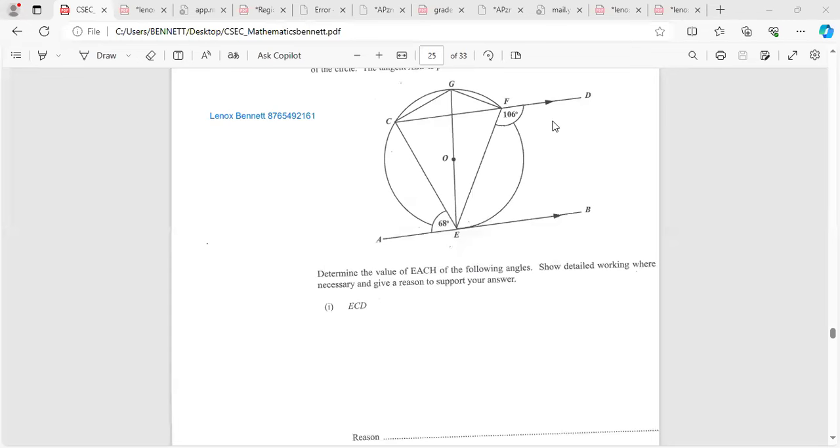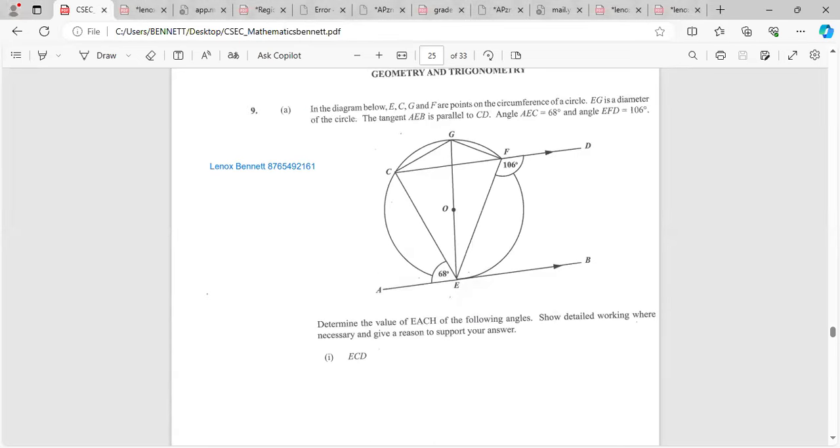Hi guys, welcome back to Lennox Bennett channel. We're going to be looking at a circle theorem question. The diagram below shows points E, C, G, and F on the circumference of a circle. EG is the diameter of the circle. The tangent AEB is parallel to CD, and angle AEC is 68 degrees, angle EFD equals 106 degrees.